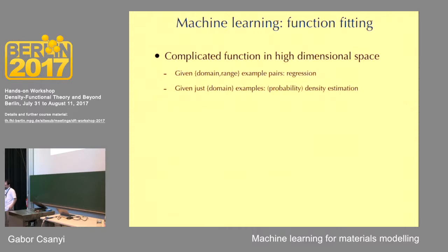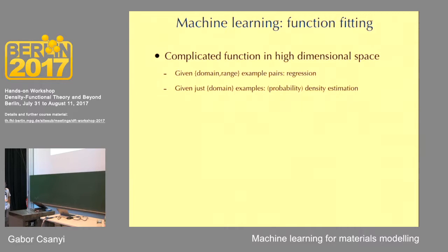Essentially, machine learning is function fitting, mathematically speaking. But that's not how you would discover it. Mathematicians have been fitting functions for a very long time — you can find splines in elementary textbooks — but you have to work hard to see machine learning in that form. That is because machine learning is about doing function fitting in very high dimensional spaces, which are very hard to think about. If you get examples of inputs and outputs — something from the domain of a function and something from the range — and you try to fit the function, that's called regression.